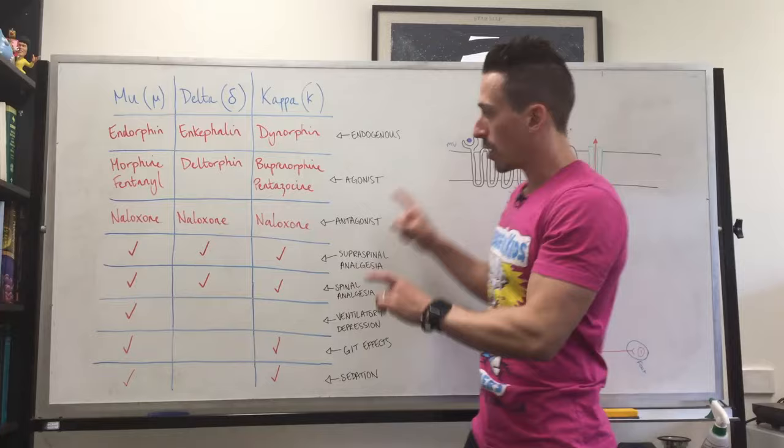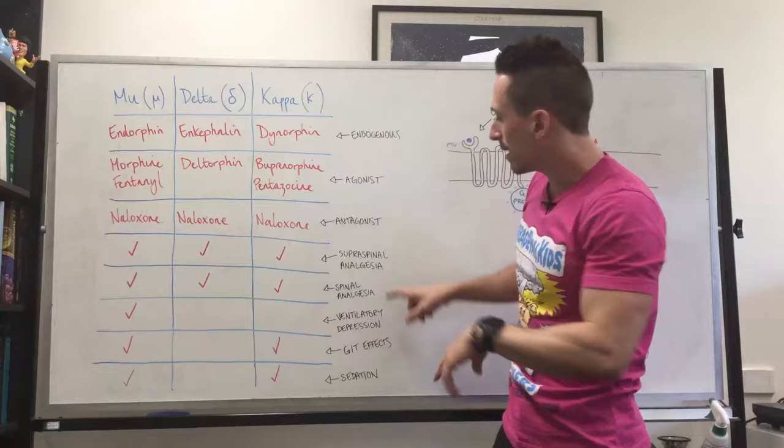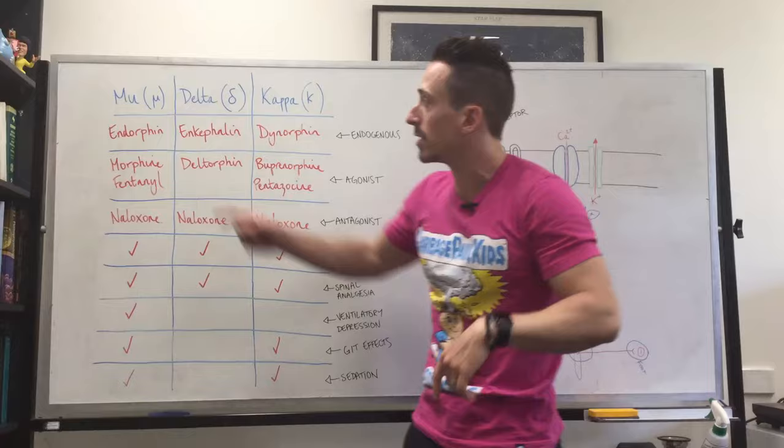When we look at the mu receptor, if you stimulate it and activate it, it has supraspinal analgesia—it alters your perception of pain and also central processing in the brain—and spinal analgesia, which means it stops the signal going from the spine up to the brain. That's how these mu receptors work with morphine.